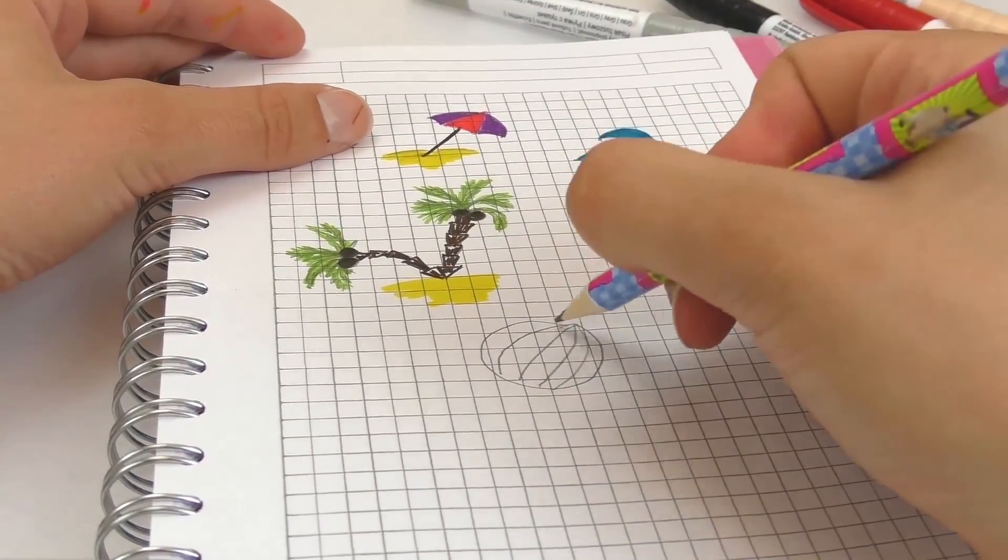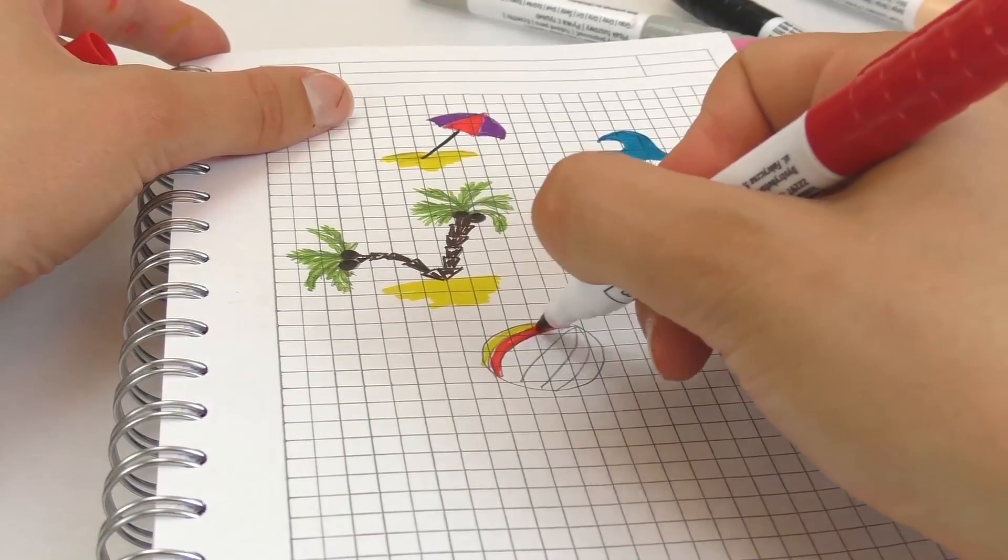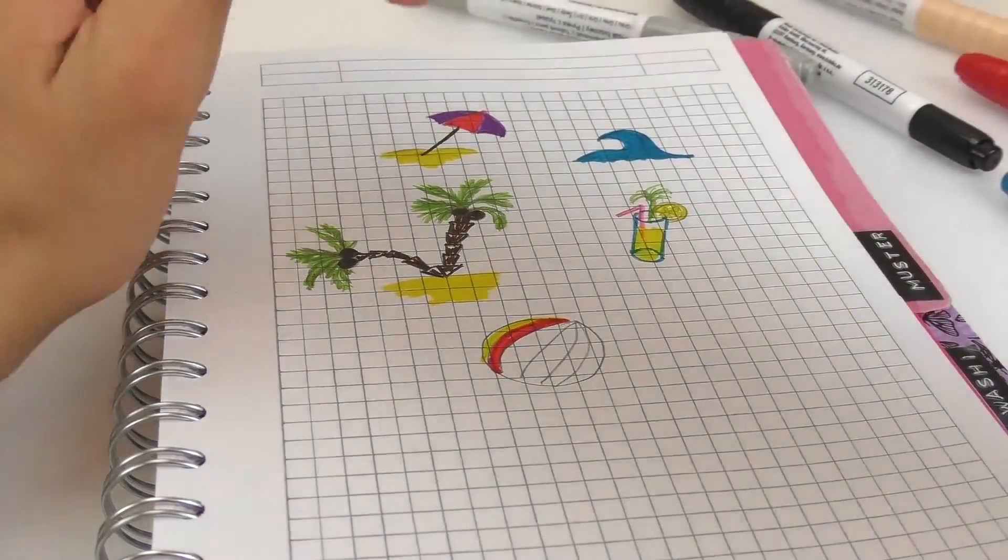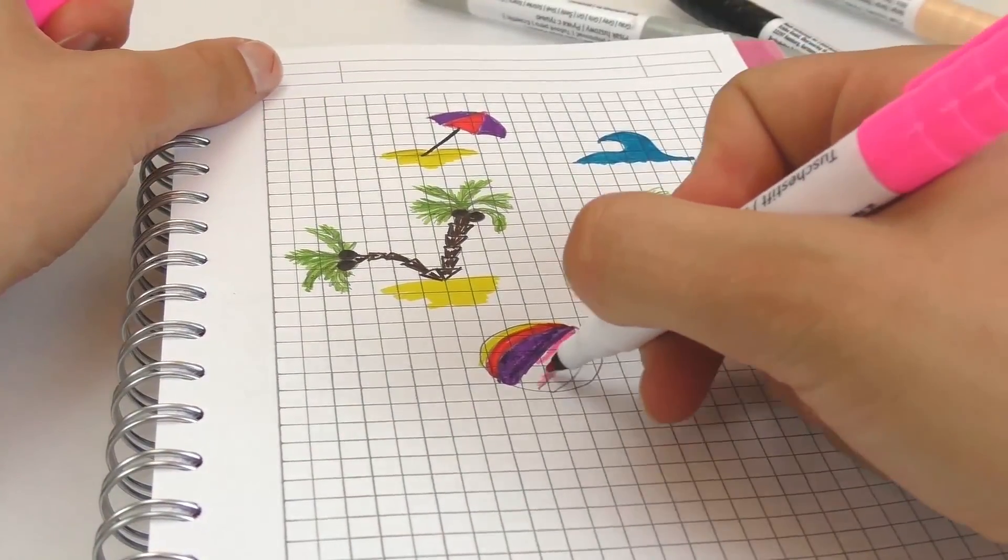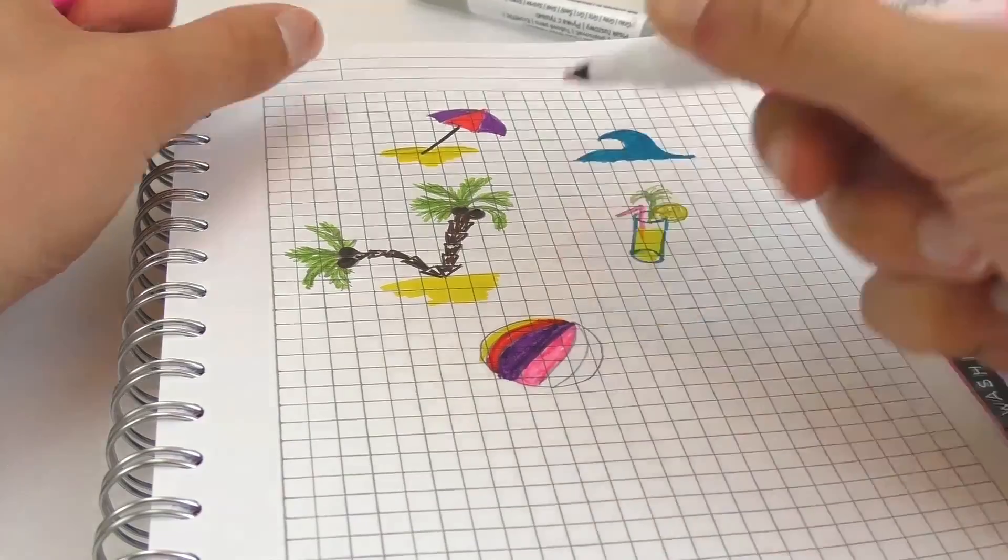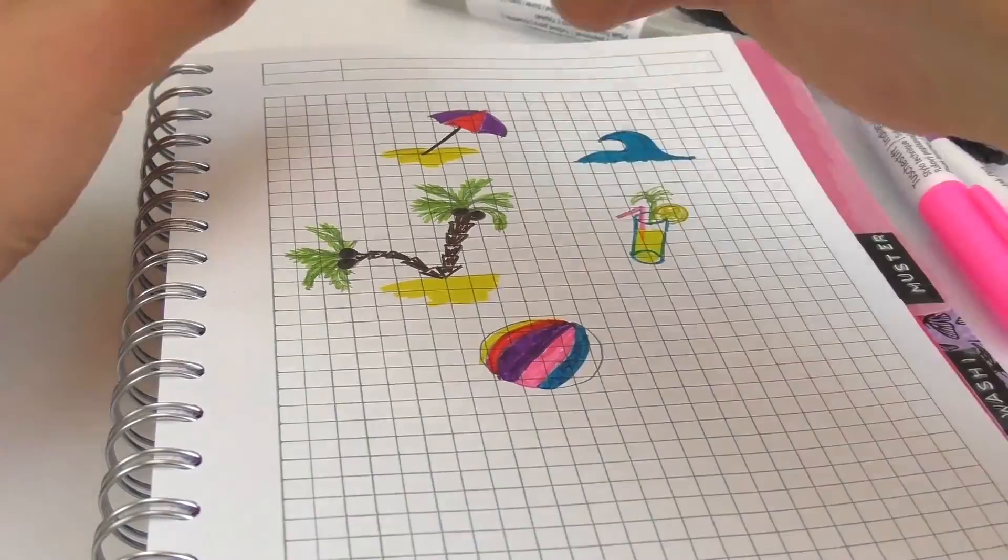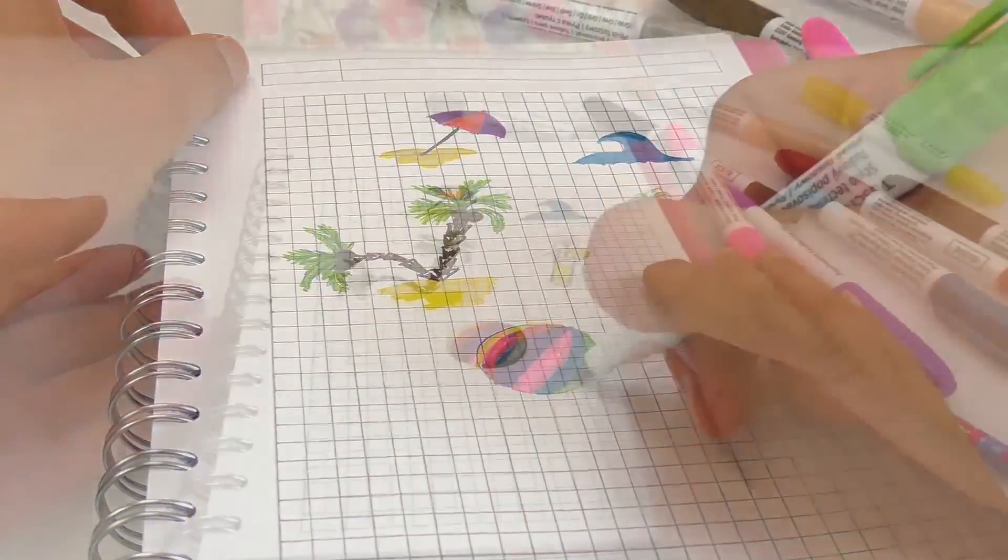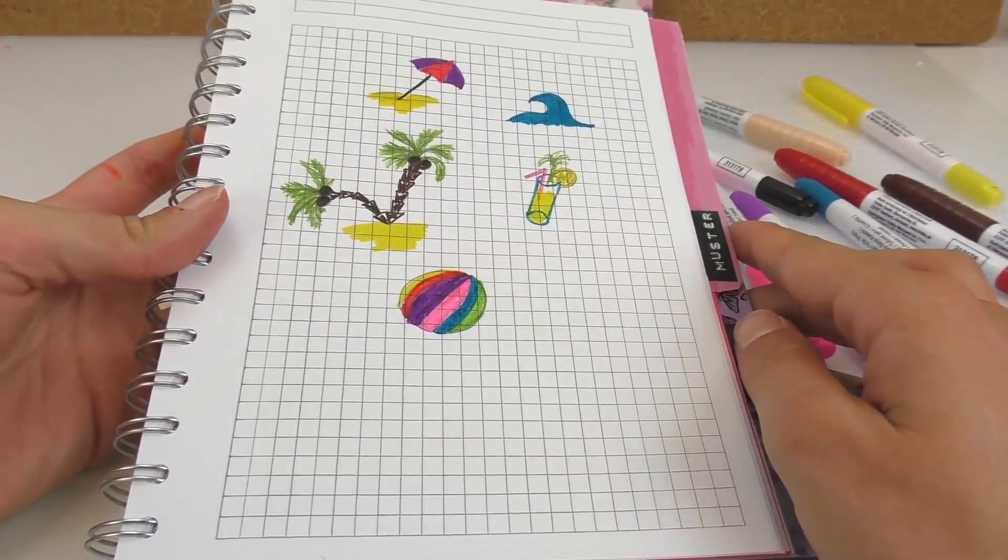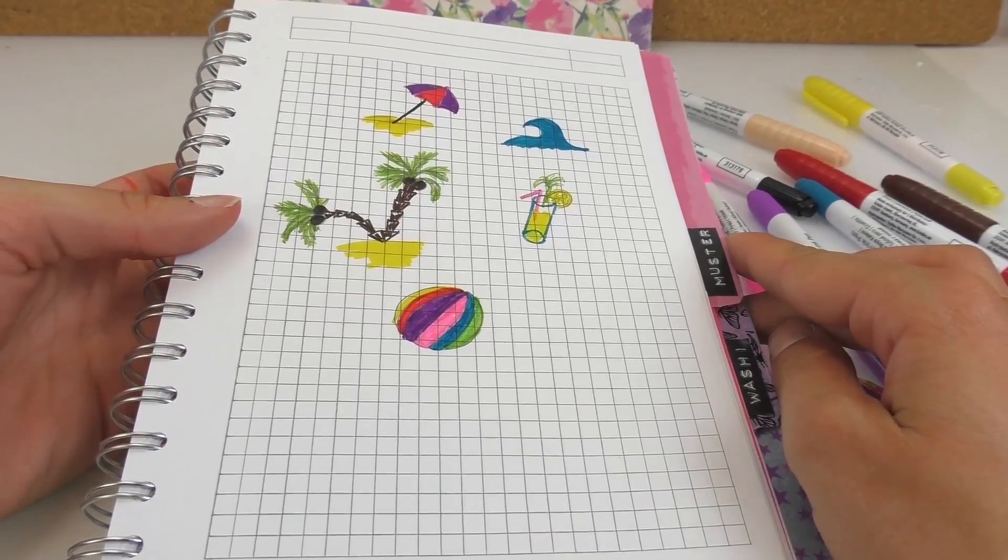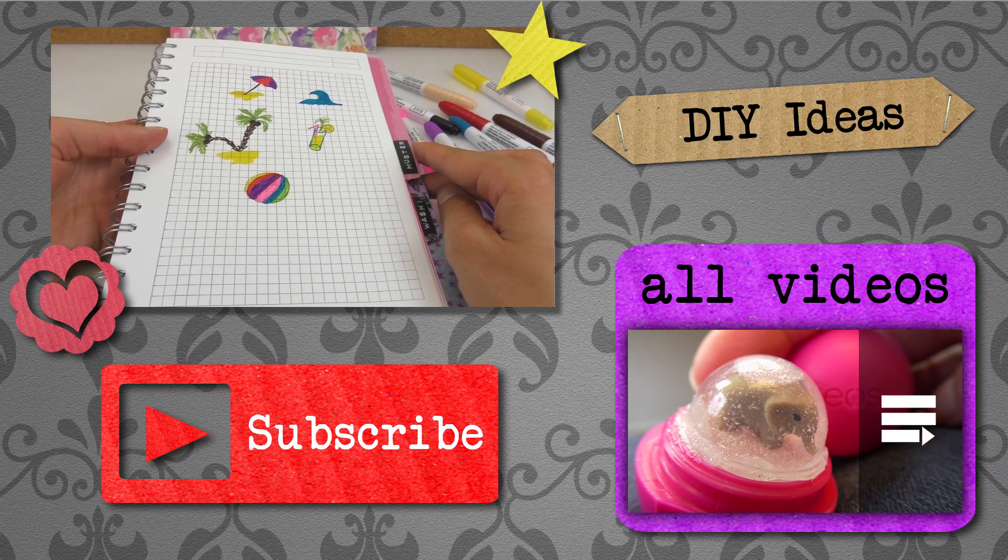And then a beach ball. Well, here we are, we have an umbrella or a parasol, palm trees, a cocktail, a wave or the sea, and a beach ball, proper summer and beach themed.